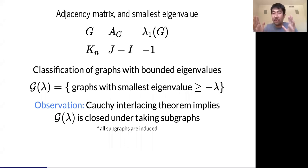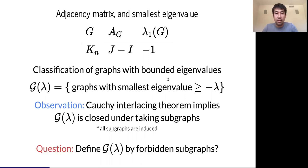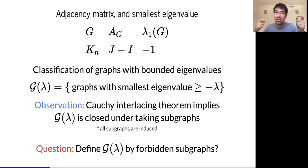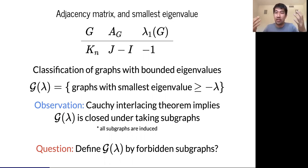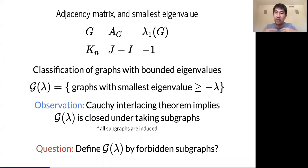Throughout the talk, all subgraphs will be induced. Here's a natural question: if you know something is closed under taking a certain operation, you want to know whether you can define this class of structures by forbidding certain substructures. In this context, I'd like to ask whether we can define this family G(λ) by forbidding some number of subgraphs.